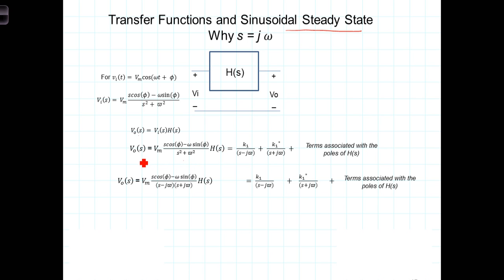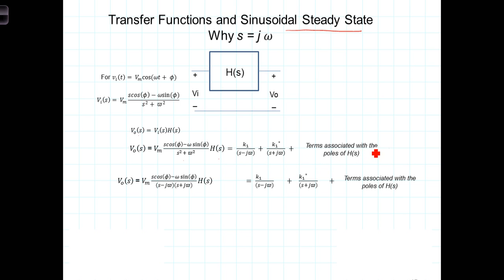To go back into the time domain we would then need to take this expression, break it down into its partial fractions, and then transform those partial fractions back into the time domain. For this analysis we're going to leave H(S) unspecified and just carry along the terms of H(S) as such. Any poles associated with H(S) would have a partial fraction term here also.